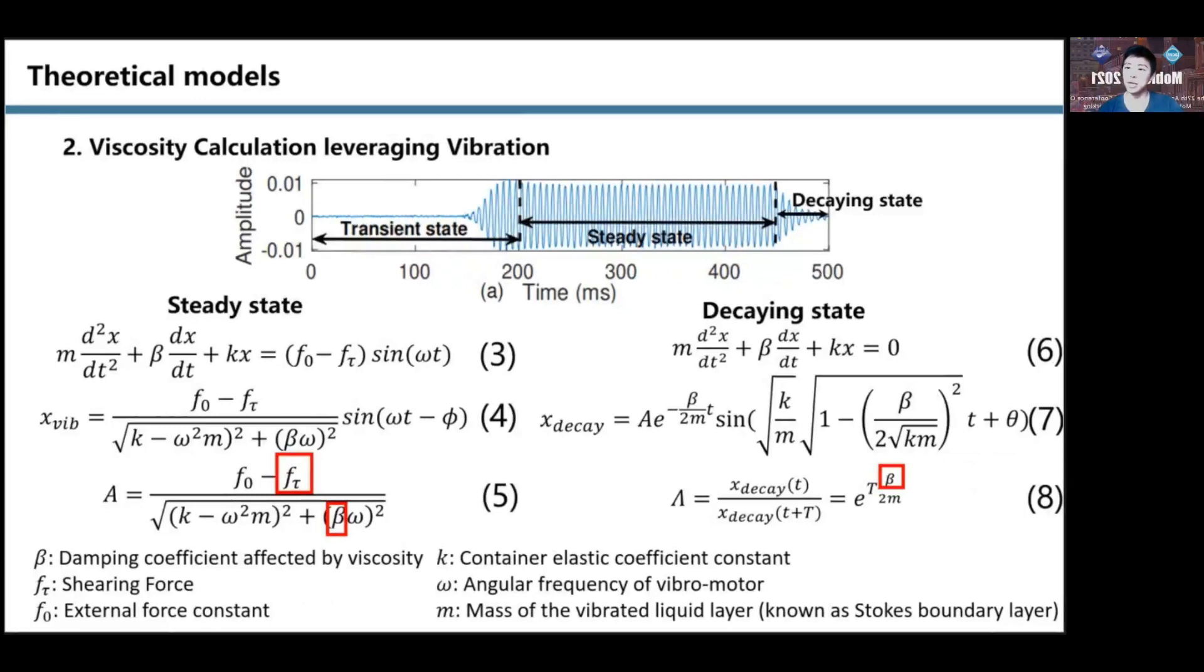Specifically, as shown in the figure, when the motor generates vibration, we can separate it into three states: transient, steady, and decaying. We eliminate the transient state vibration signals since it is highly dynamic and intractable to model. For the steady state, we consider the vibrated liquid layer as a study object and model a spring-mass-damper system of single degree of freedom.